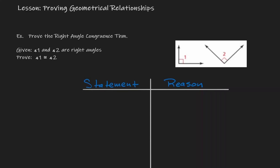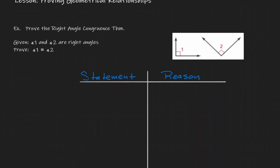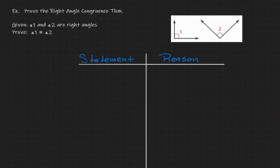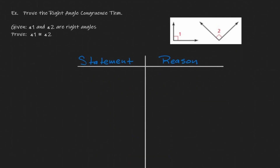Welcome. In this video we will be proving geometrical relationships. Let's start by looking at example number one. What we want to do in example number one is we want to prove something that we're going to refer to as the right angle congruence theorem.